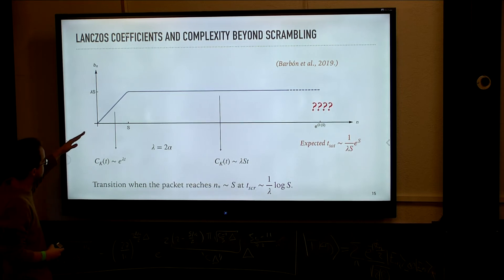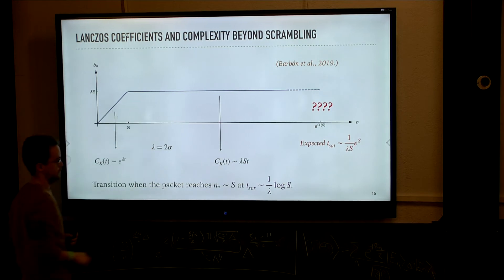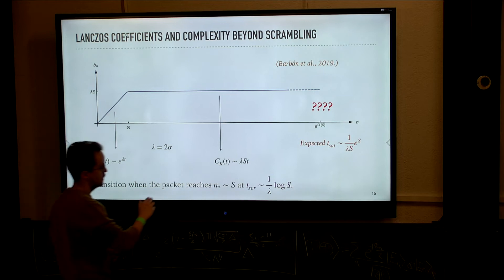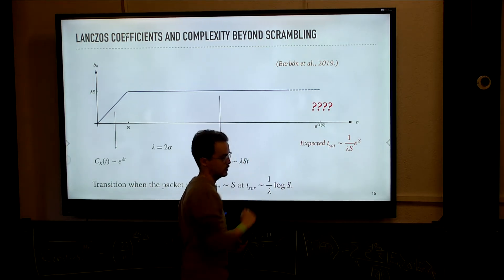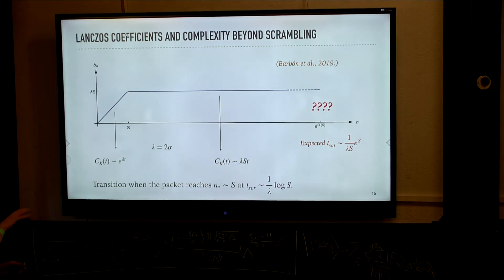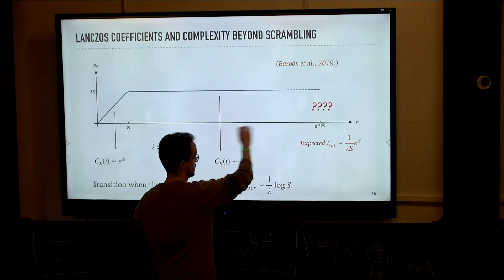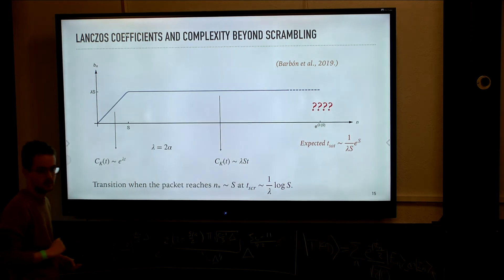The question is what happens when little n becomes of order exponential in S. At this point we have e^(dS) many Krylov directions and e^(dS) many Lanczos coefficients. We should have already explored all the available Krylov space, and the Lanczos algorithm should terminate because it cannot construct arbitrarily many orthogonal directions — so the Lanczos coefficients should go to zero. But this is not seen in the asymptotic argument I've just presented, so there are lots of question marks about what happens there.